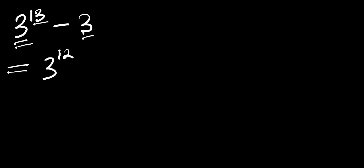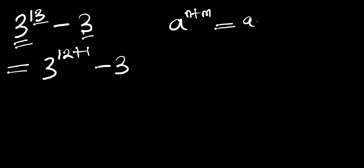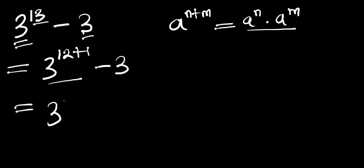We have 3^(12+1) minus 3, and we make use of the identity a^(n+m) equals a^n times a^m. Applying this identity, we get 3^12 times 3, then minus 3.